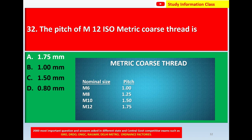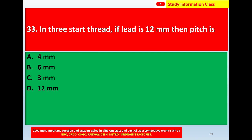For ISO metric coarse thread, a table of nominal sizes and corresponding pitches is used. For M6 the pitch is 1.00 mm; for M8 the pitch is 1.25 mm; for M10 the pitch is 1.50 mm; for M12 the pitch is 1.75 mm. Since question 32 asks for the pitch of M12, the correct answer is option A: 1.75 mm.